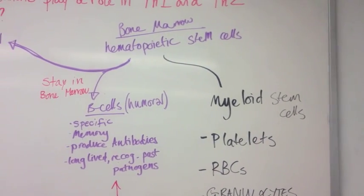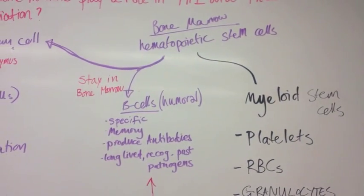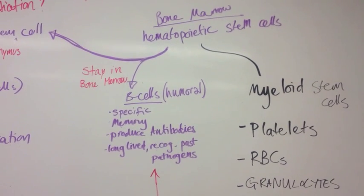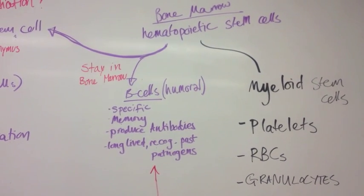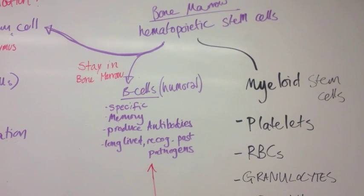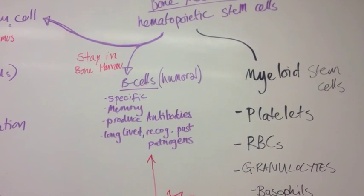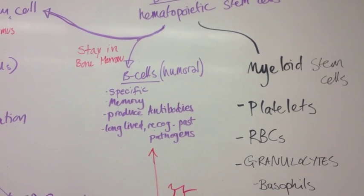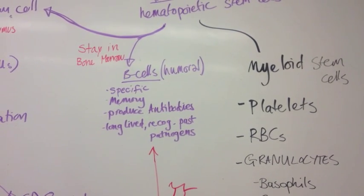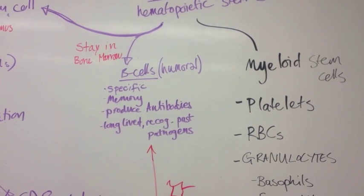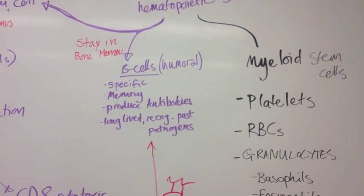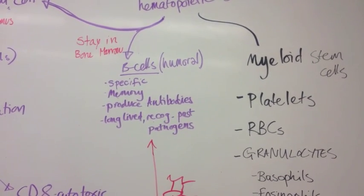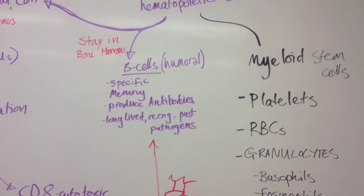Alternatively, these can stay in the bone marrow and become B cells as part of the humoral immunity. B cells are specific to a pathogen, they have memory, they produce antibodies, and they are long-lived so that they can recognize past pathogens.